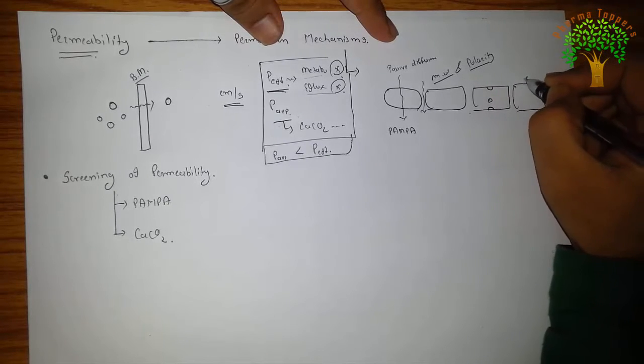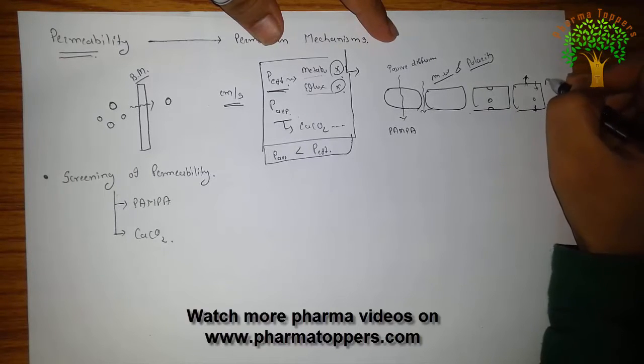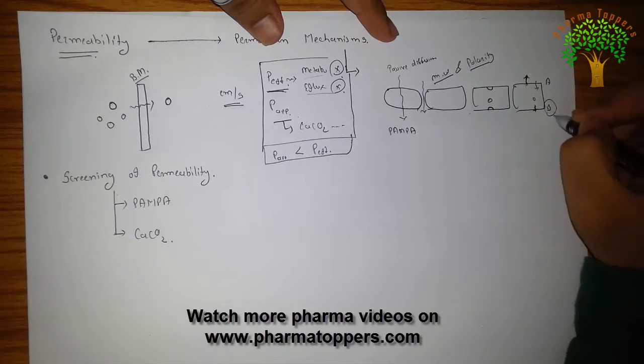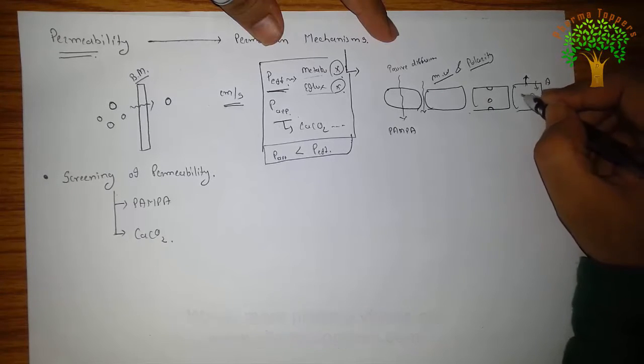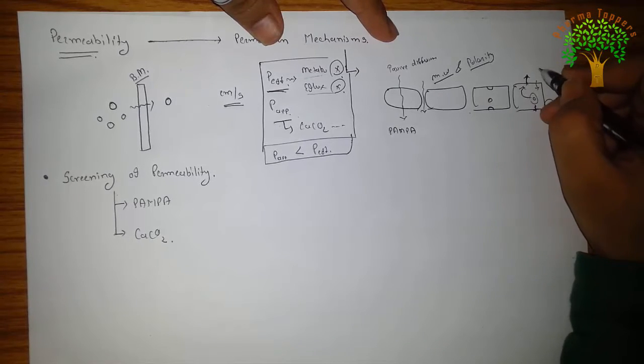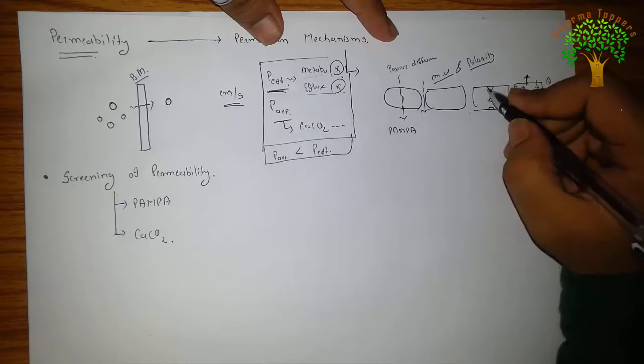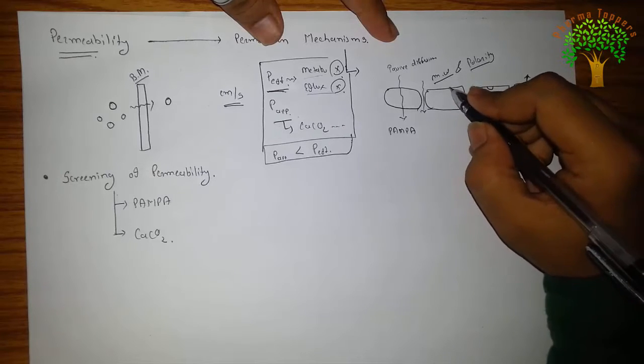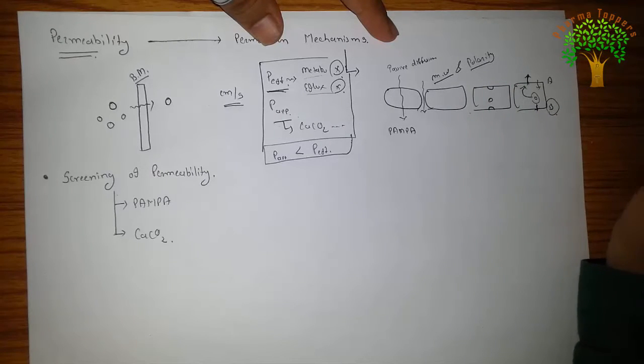Next is the efflux. Compound once taken in may not pass from apical to basolateral site. Basolateral site is impermeable and it may be thrown out, which is known as efflux. Next is the active transport on the basis of some carriers and all that, which requires energy.